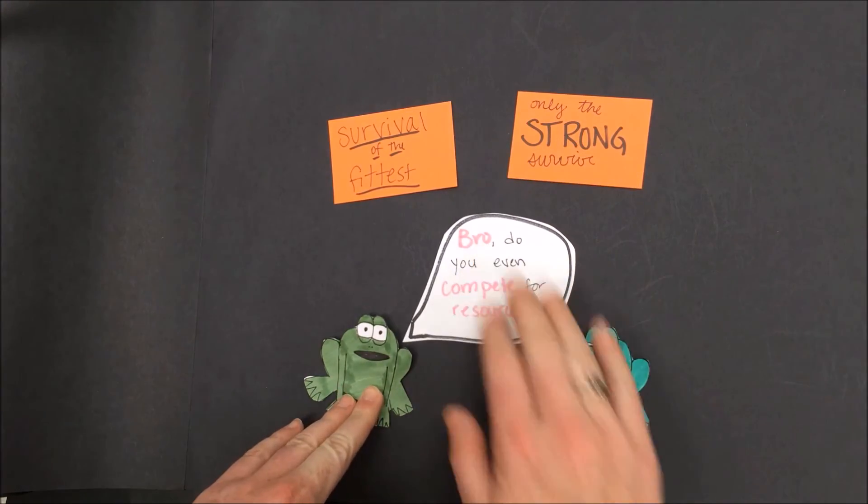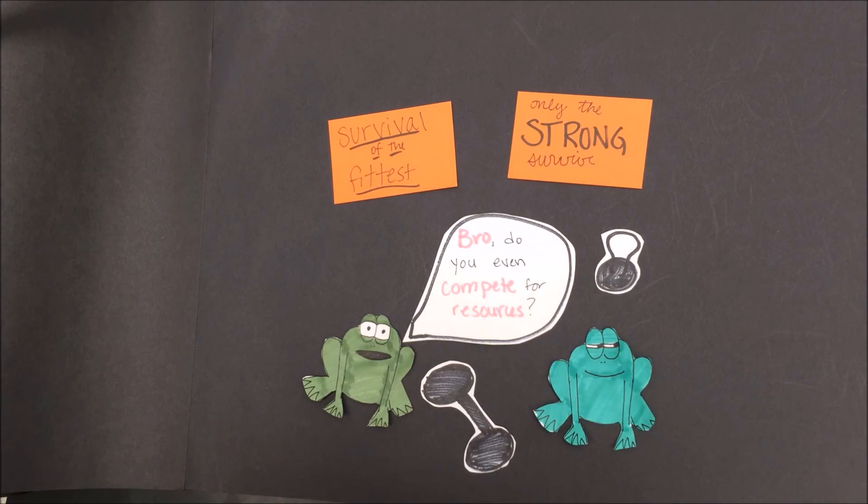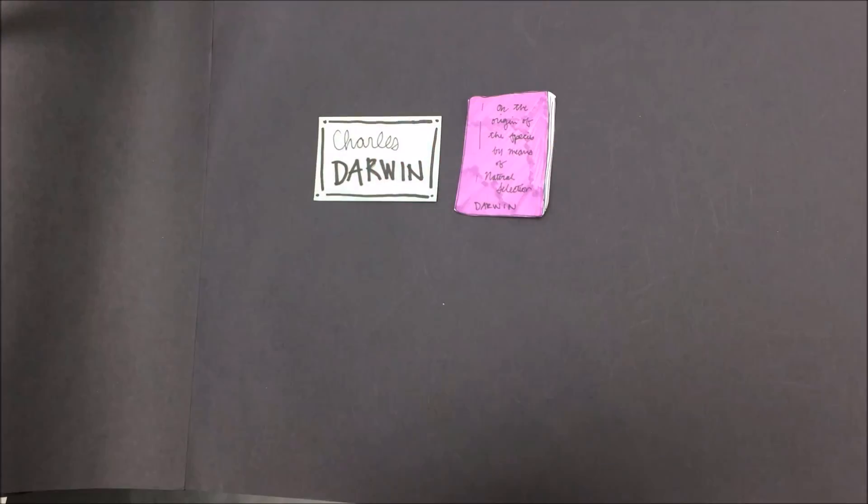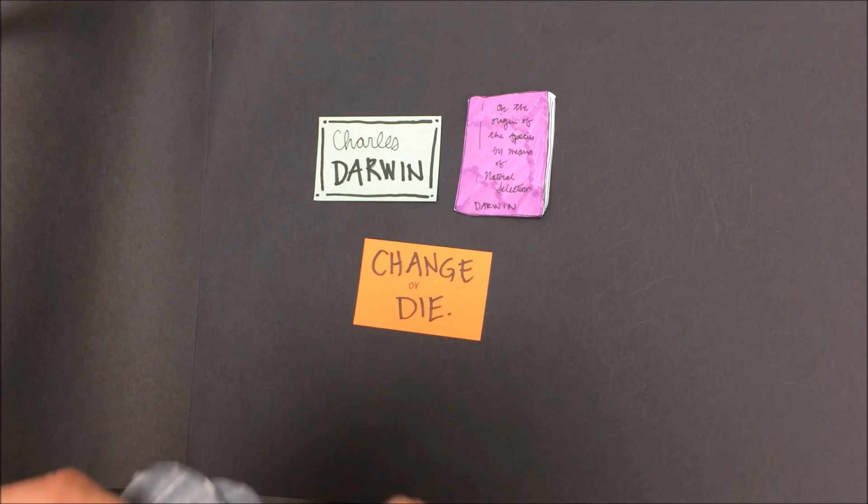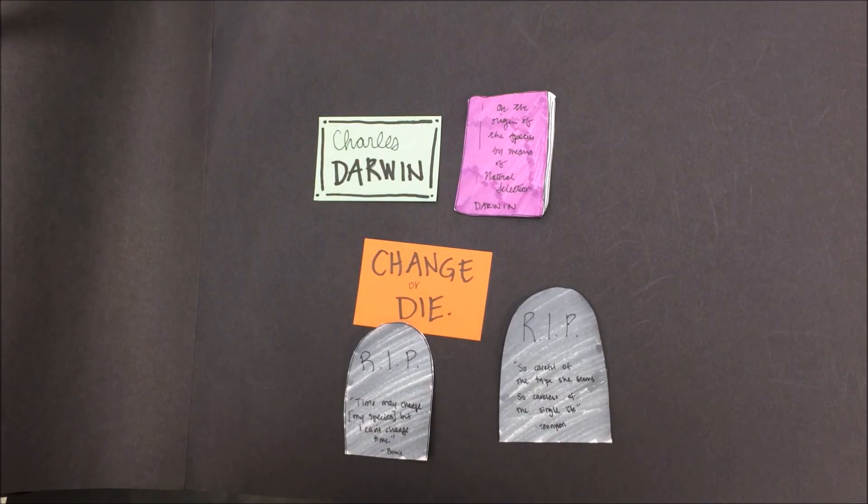Similarly, in this phrase 'only the strong survive,' only the traits that are strong or good in that particular environment will be passed on to the next generation. Fitness and strength in this case have less to do with lifting weights or exercise and so much more to do with having happened to inherit traits that happen to help you in certain situations to compete for resources and survive to see another day. Darwin's theory could very succinctly be summed up as 'change or die.' Species can either readily adapt to their environment or they die.